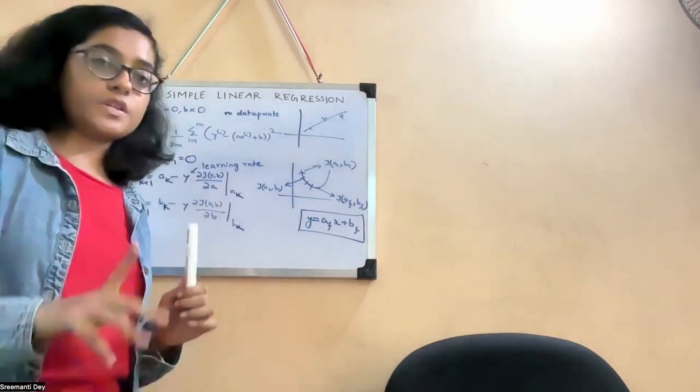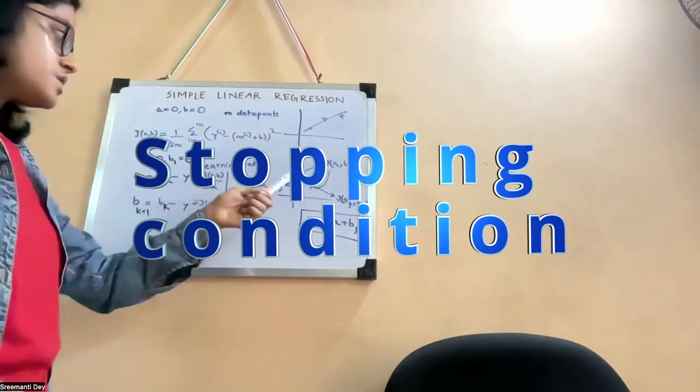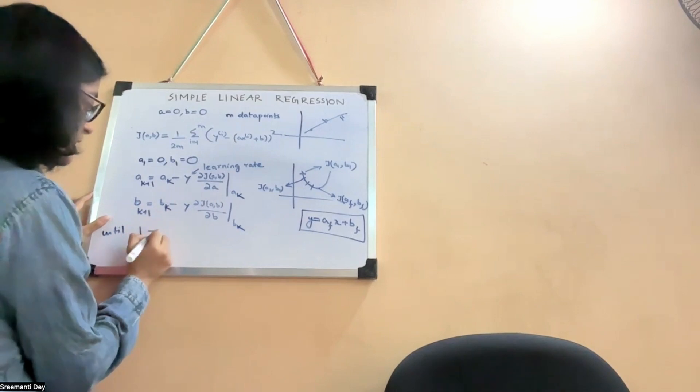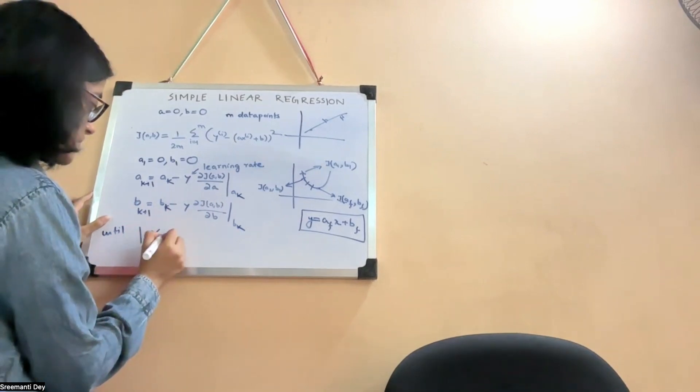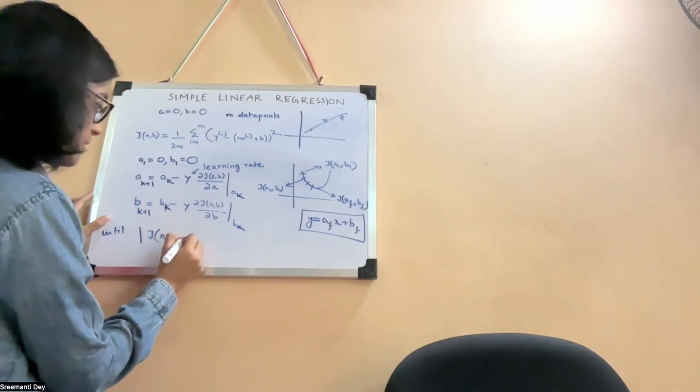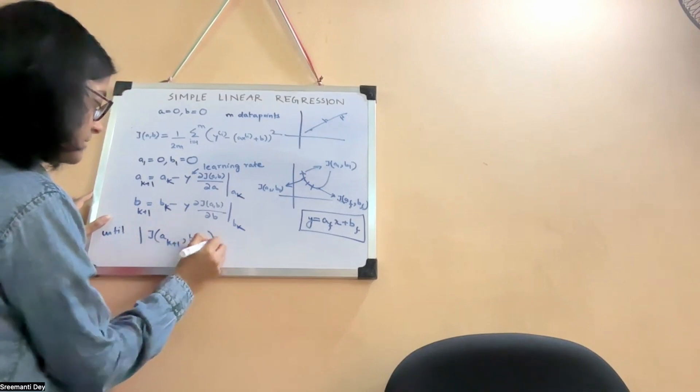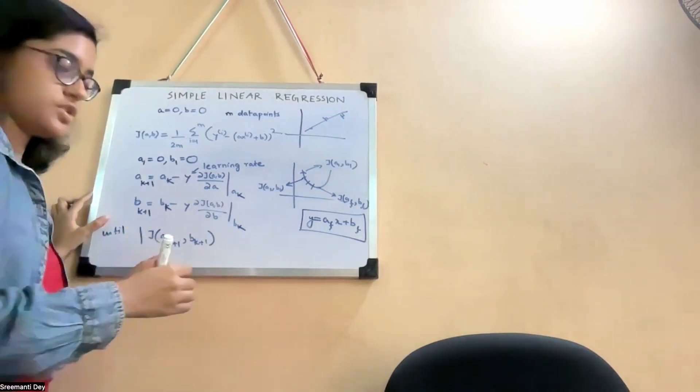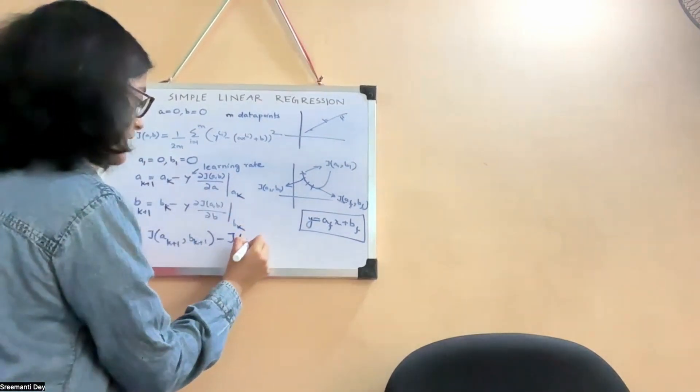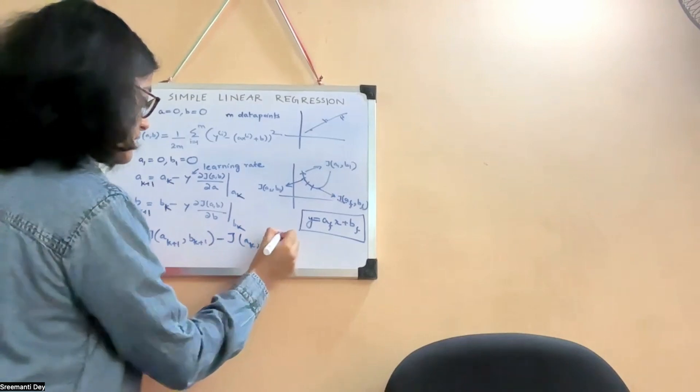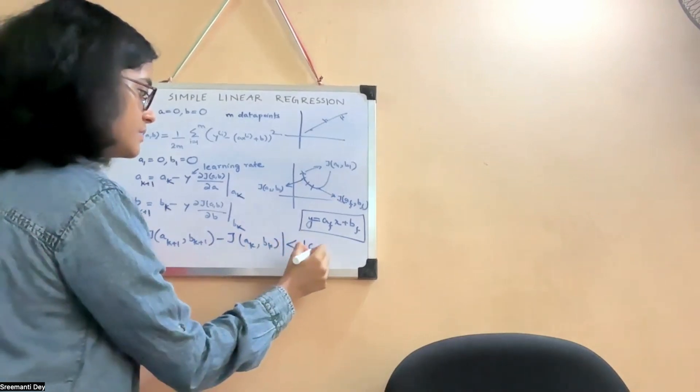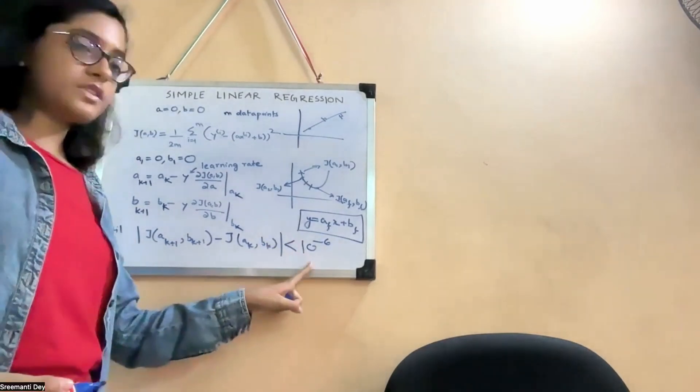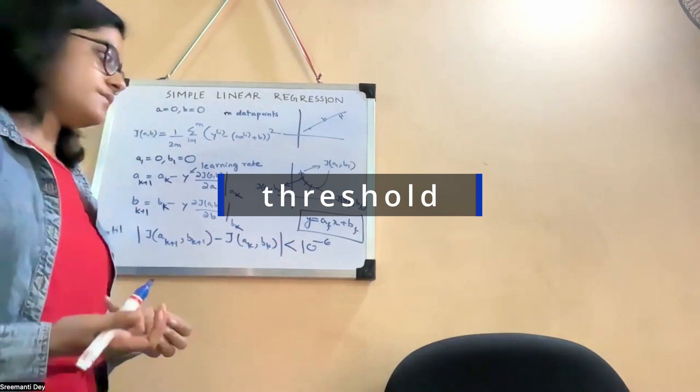Now this is very important. What is the stopping condition? You can't do this forever. So you will have to check. We will do this until the cost function does not change by much. So until J(AK plus 1, BK plus 1) - remember J is the loss function - so the losses are not differing by much. So what is much? J(AK plus 1, BK plus 1) minus J(AK, BK) less than 10 to the power minus 6. As soon as this becomes less than 10 to the power minus 6, we are done. This is the threshold. We just need to go below this threshold, and then we are done.